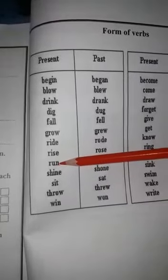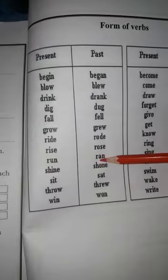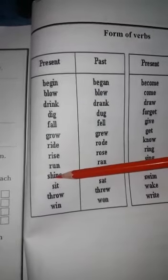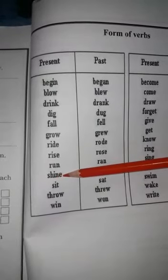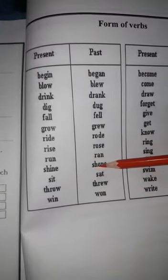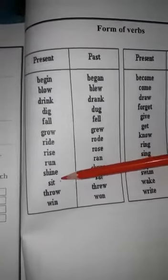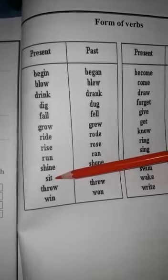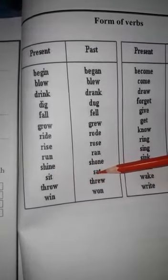R-U-N, run. Run ki second form kya hai: R-A-N, ran. S-H-I-N-E, shine. Shine ki second form kya hai: S-H-O-N-E, shone. Next hai S-I-T, sit. Sit ki second form kya hai: S-A-T, sat.